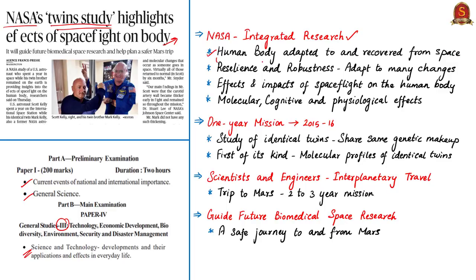The twin study demonstrated the resilience — the capacity to recover quickly — and robustness — the ability to withstand adverse conditions — of how a human body can adapt to a multitude of changes induced by the spaceflight environment. In short, this study provides a comprehensive and integrated molecular view of the effects and impacts of spaceflight on the human body. The study recorded the molecular, cognitive and physiological effects on the astronaut during the mission. It was a one-year mission, beginning in March 2015 and ending in March 2016, conducted on identical twin astronauts.